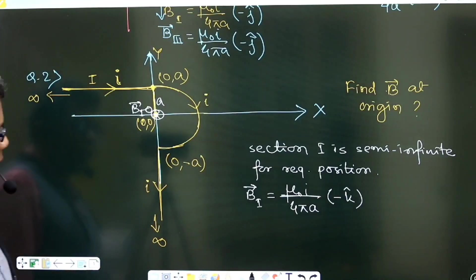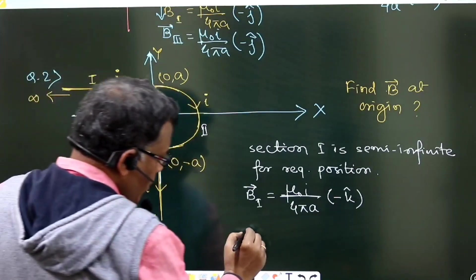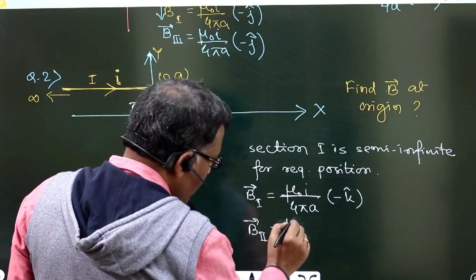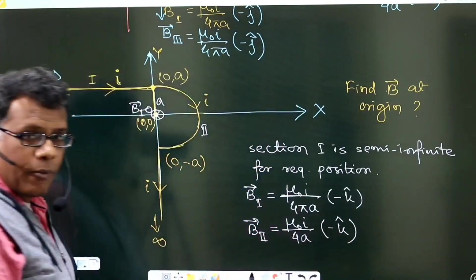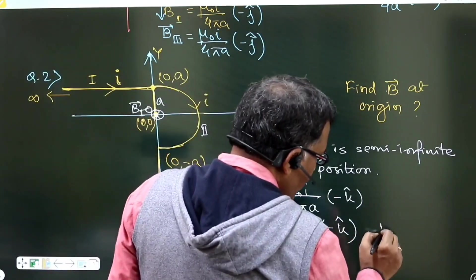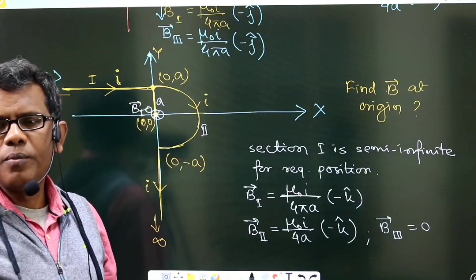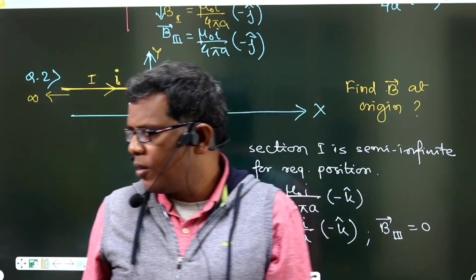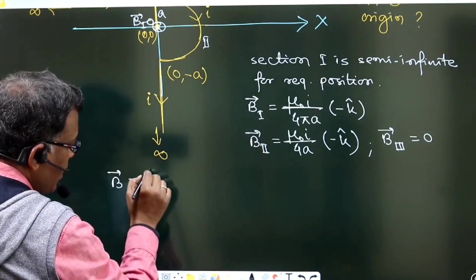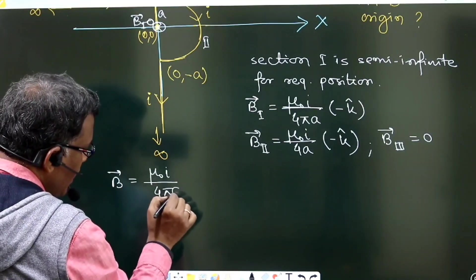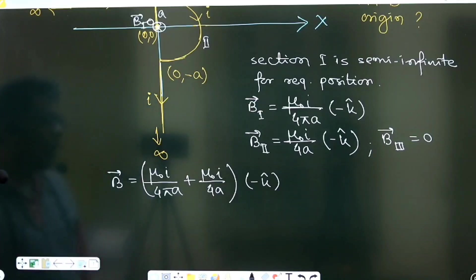The wire lies on the xy plane, so the direction of magnetic field is into the plane. For section 2, being a semi-circle with clockwise current, the magnetic field will also be inward: μ₀i/4 times the radius, also minus k̂. The magnetic field due to section 3 is zero because the required point lies on the locus of the conductor itself. So the net magnetic field is B₁ + B₂ = μ₀i/4πa + μ₀i/4a, both in the minus k̂ direction.